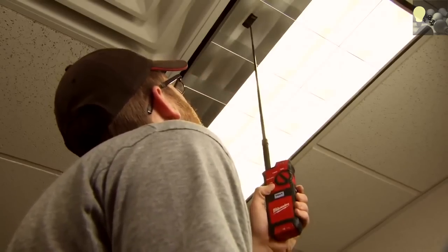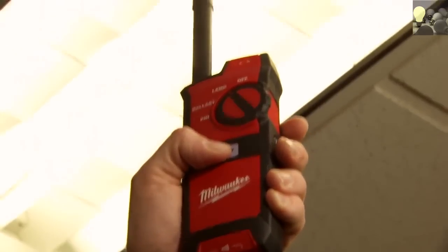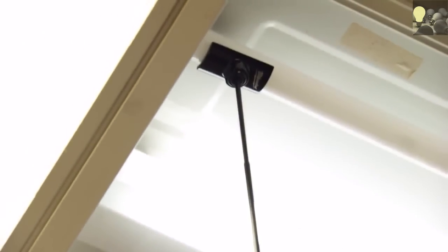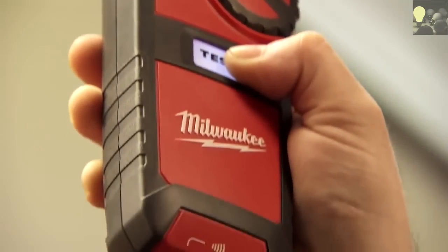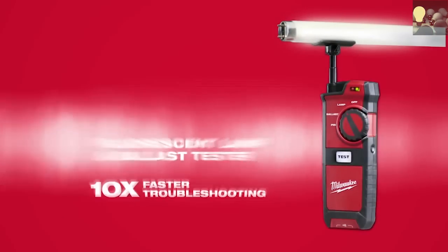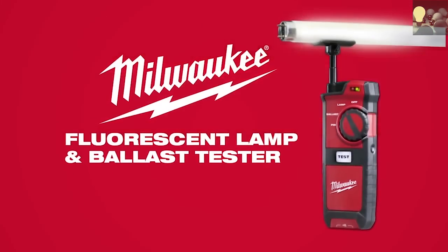We're able to diagnose and analyze the problems quicker. On normal ceiling heights, we can use the extender rod and test the lamp without ever having to pull out a ladder and know exactly what we're going to need. To be able to save that time adds up to a lot of money to the bottom line. For 10 times faster troubleshooting, get the Fluorescent Lamp and Ballast Tester from Milwaukee.